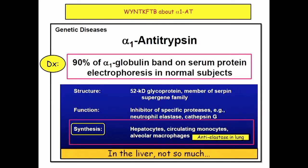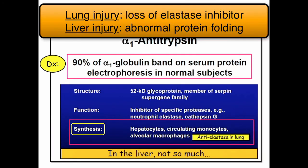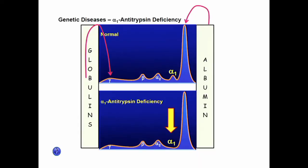Alpha-1 antitrypsin, then we're done with metabolic liver disease. Alpha-1 is quick. We'll look at serum protein electrophoresis — alpha-1 lives on the alpha-1 spike. The key thing to know about alpha-1 is that in the liver it damages the liver one way, and in the lung it causes damage another way. In the lung it's loss of antielastase; elastase causes damage to the lung. In the liver it's a folding process. On electrophoresis you see albumin, negatively charged globulins migrating far, and you're lacking the alpha-1 peak. You can get protein electrophoresis or just get an alpha-1 level.